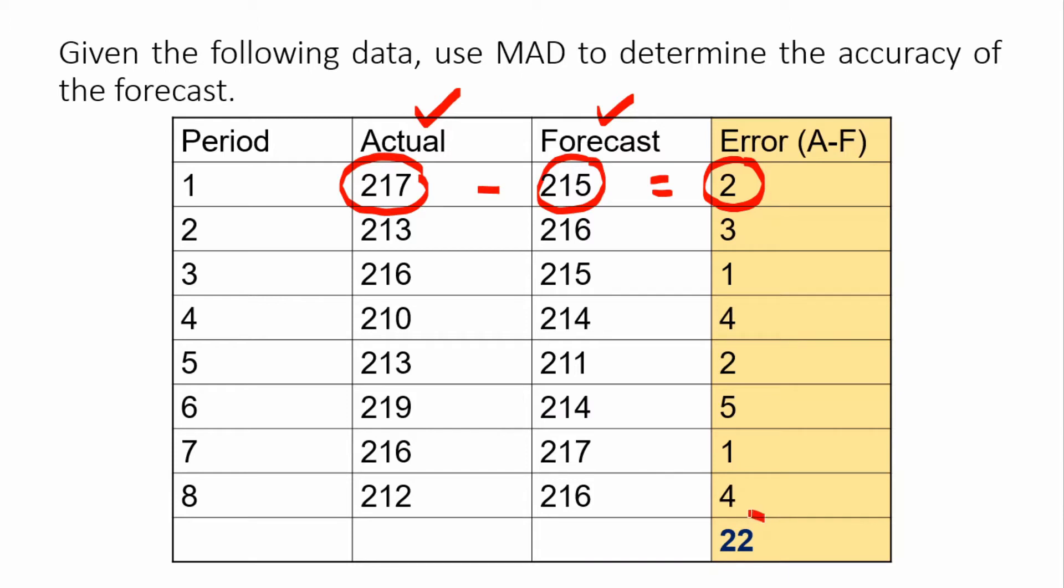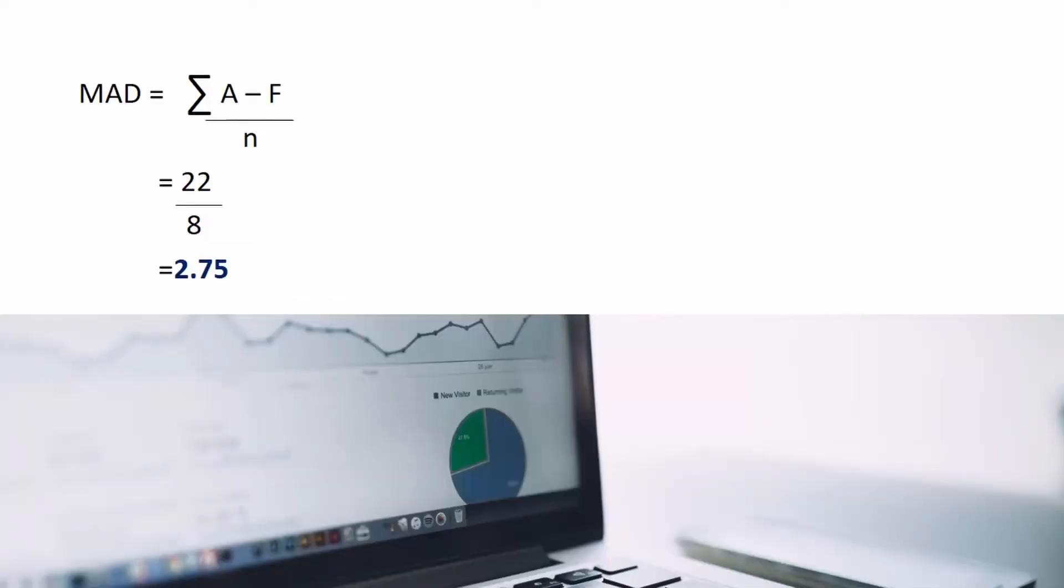We get the summation of the errors, which is 22, and divide it by 8, the number of data. The mean absolute deviation is 2.75. A mean absolute error of 0 means there is no error in the forecast.